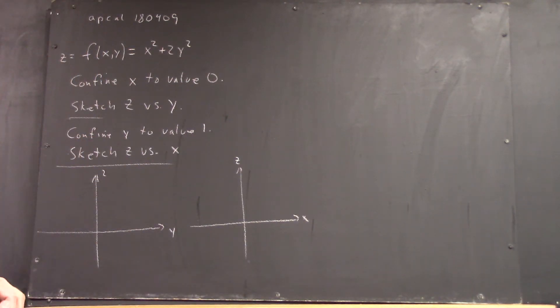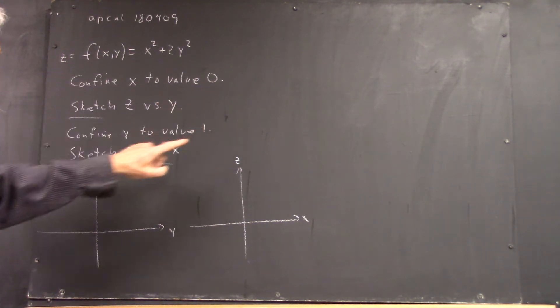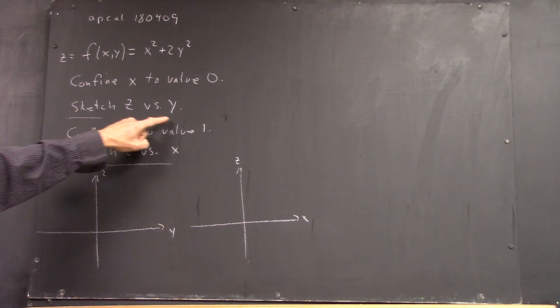I'm going to say just what I already said. Okay, so Z is this. We're going to confine X to value 0 and sketch a graph of Z versus Y.